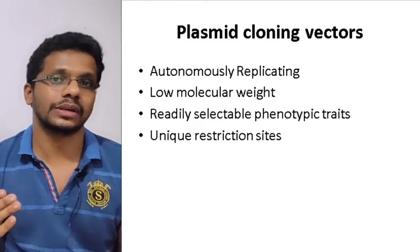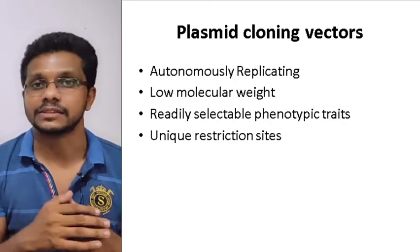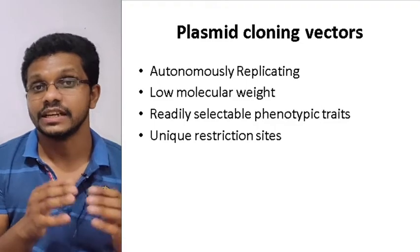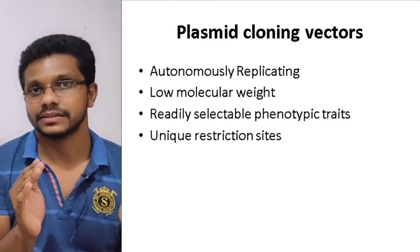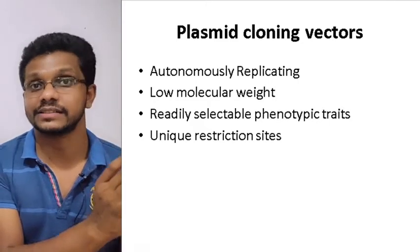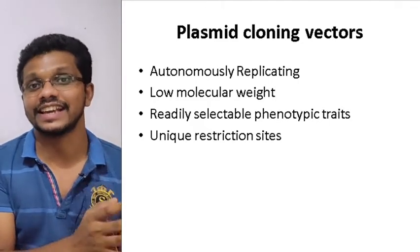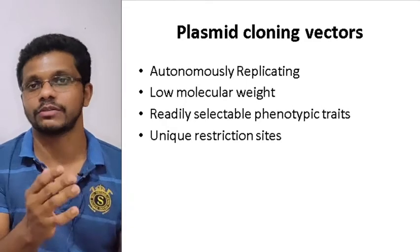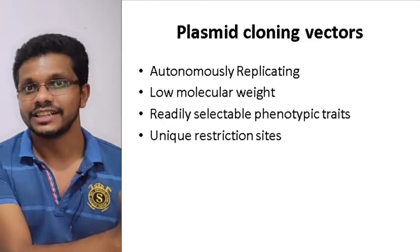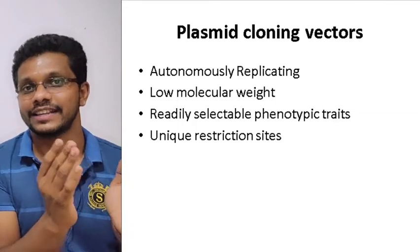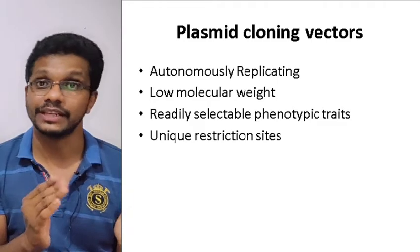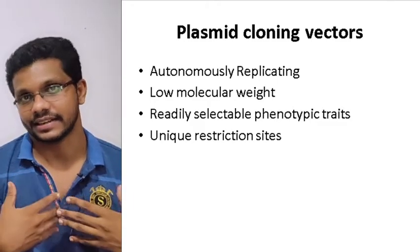But if you are using the calcium chloride method or simple methods, which are commonly used for plasmid cloning vectors, the maximum size is around 10 kilobases. So if your plasmid vector is 5 kilobases, it can carry another 5 kilobases, and the total will be 10 kilobases. But if your plasmid is 8 kilobases, it can only carry 2 kilobases. Depending on the size of the plasmid vector, you can evaluate how much DNA it can carry.